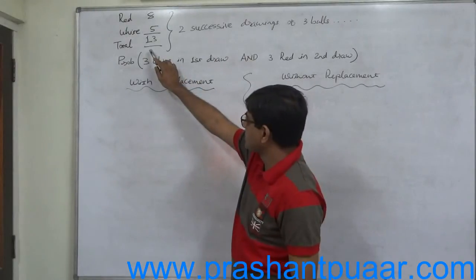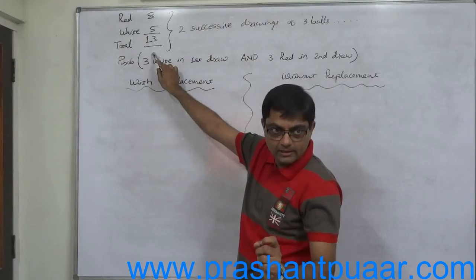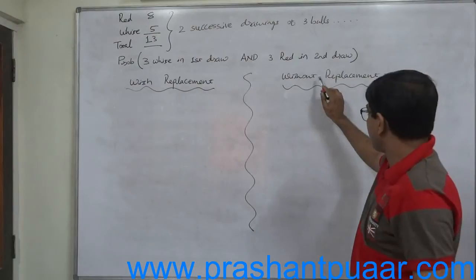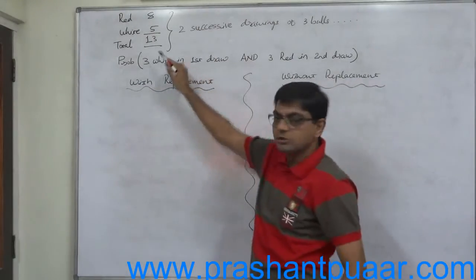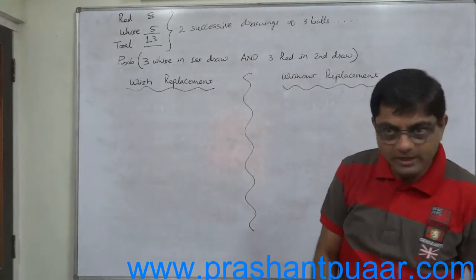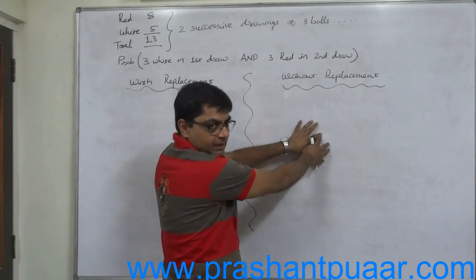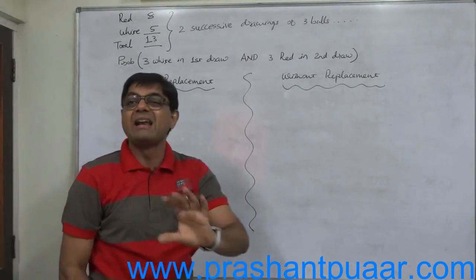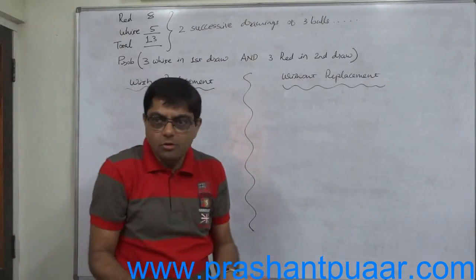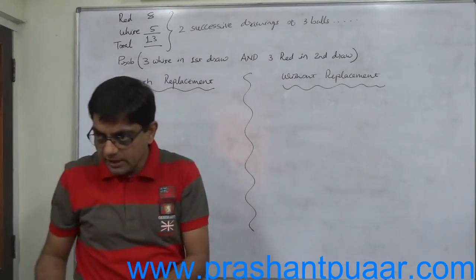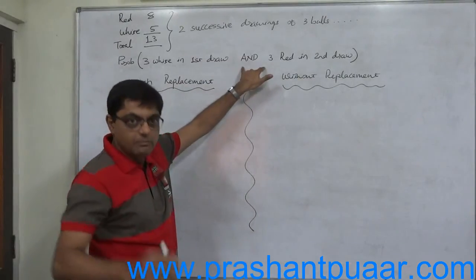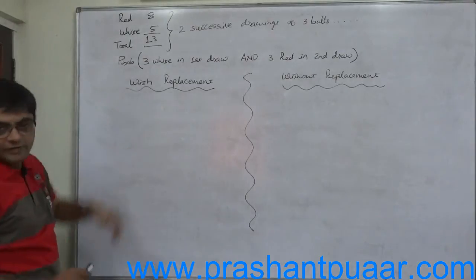At the time of the first draw, 13 total bowls are in the bag. At the time of the second draw, in the case of without replacement, the total number of bowls will be 13 minus 3, that means 10. This is to be considered at the time of calculating probability for the without replacement case.